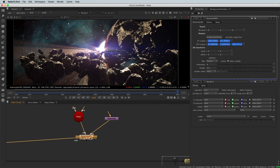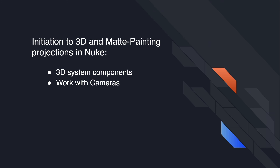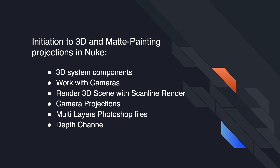Some of the key takeaways of this course are: 1. Learn the essential components of a 3D system in Nuke. 2. Work with cameras. 3. Render a 3D scene through a scanline render. 4. Work with camera projections. 5. Work with multi-layer Photoshop files. 6. Work with the depth channel. 7. Use the Z-Defocus node.